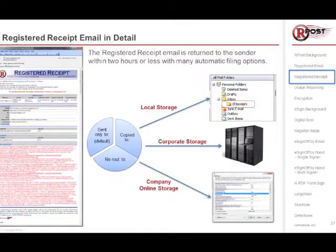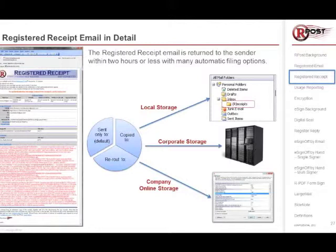The registered receipt comes back to the sender 100% of the time within two hours or less. There are different options a company can set up to store or locate these receipts. Number one is local storage — this is the default, placing receipts in a subfolder of the sender's Outlook inbox. Another option is company storage, sending a copy or rerouting emails to a central mailbox like receipts@yourcompany.com. Others prefer company online storage, allowing a search through a secure web archive without storing receipts on a local computer.